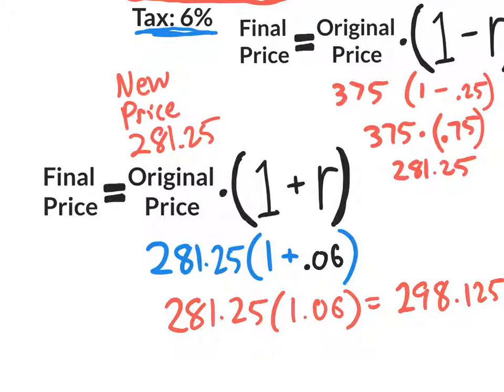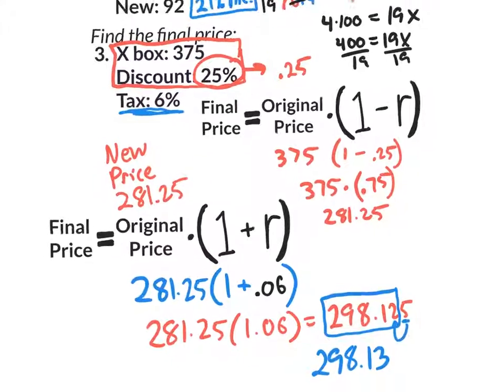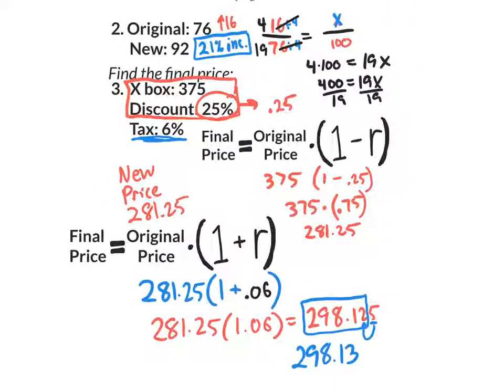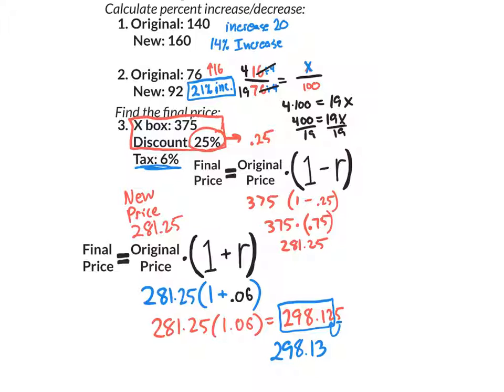Now, what's the actual final price, out-the-door price? 298.13, the 5 does make that 2 round up to a 3. So 298.13. So I hope this helps. I would definitely watch this video again, do these problems over again, because these same type of problems will be on the quiz this Friday. Now, the other part of Friday's quiz is going to be solving inequalities, which we're going to move on to right now.